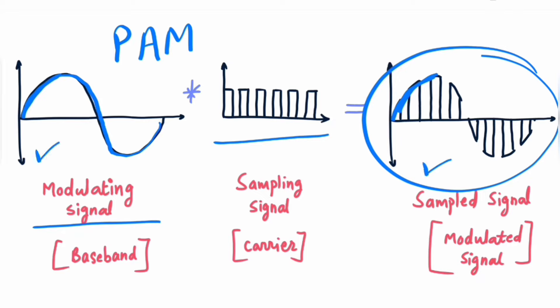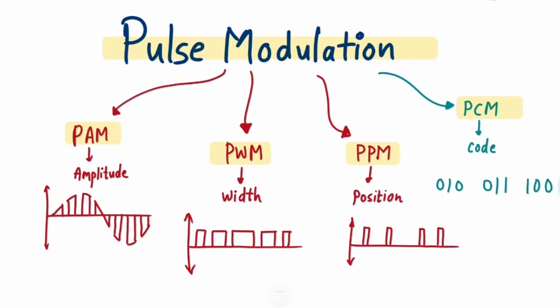Now let's take the Pulse Modulation overview. In Pulse Modulation, the first type is PAM, which we have discussed in short. The amplitude will change according to the modulating signal amplitude.